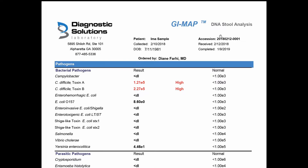They categorize each type of organism they find based on our knowledge. For example, these organisms here are known as pathogens — things that cause problems. In this sample report we can see elevations in Clostridium difficile Toxin A and Toxin B. These are genetic variants of this microorganism. C. difficile normally lives in our guts in harmony and is generally kept in check by other organisms, but sometimes genetic variants produce toxins, which is why it is considered pathogenic.